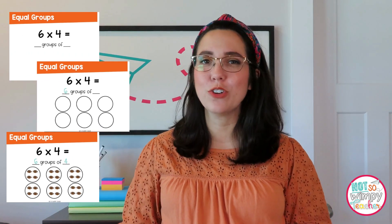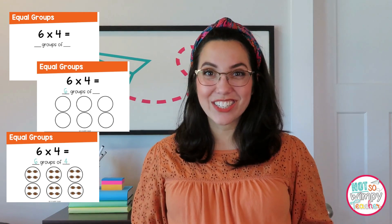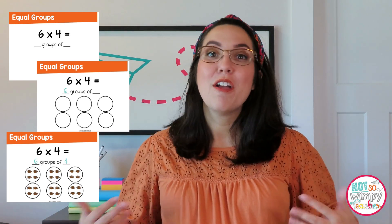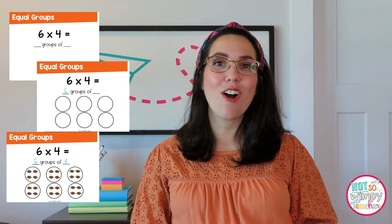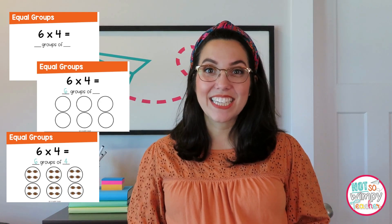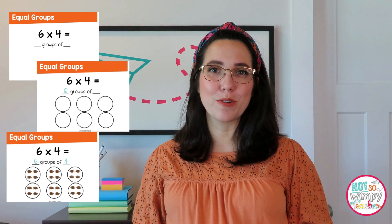Tip number three for equal groups is to make sure you give your students practice, practice, practice with this skill. I like to pull out each piece from my multiplication problem and model that with students, and then let them fill in my groups with my number of items. So we'll pull out: we need six groups — that means I need six circles. I have four items in each group — that means I better fill in each circle with four footballs. From there, model for your students how they can get to that answer of 24 by counting all of the items in their groups. Practice is where the magic is really going to happen for your students as they master the skill of equal groups for multiplication.